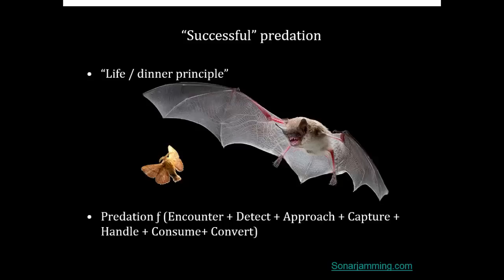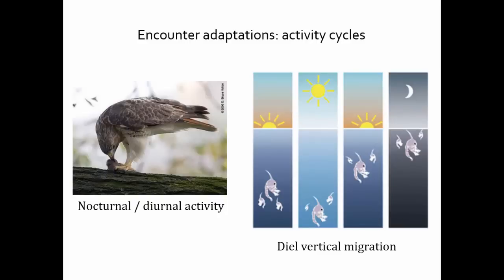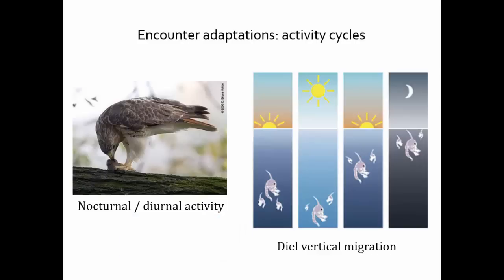I'll briefly run through all of these steps and post the referenced videos as links on the Moodle page. First, if you're going to be a predator, you need to be active at the time your prey is active. If you're a nocturnal predator, your prey will have to be nocturnal too. There are lots of prey adaptations for decreasing encounter rates and predator adaptations for increasing them — for example, zooplankton migrate vertically in the water column, and individuals that do that avoid being consumed by visual predators.